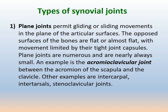We have about seven types of synovial joint, and these define the structure and the types of movement they perform. The first is the plane joint. In a plane joint, movement is gliding or sliding in a plane of a particular surface. As the name suggests, 'plane' means flat surface — the movement between bones is gliding, with opposing surfaces of the bones being flat or almost flat, with movement limited by a tight joint capsule.